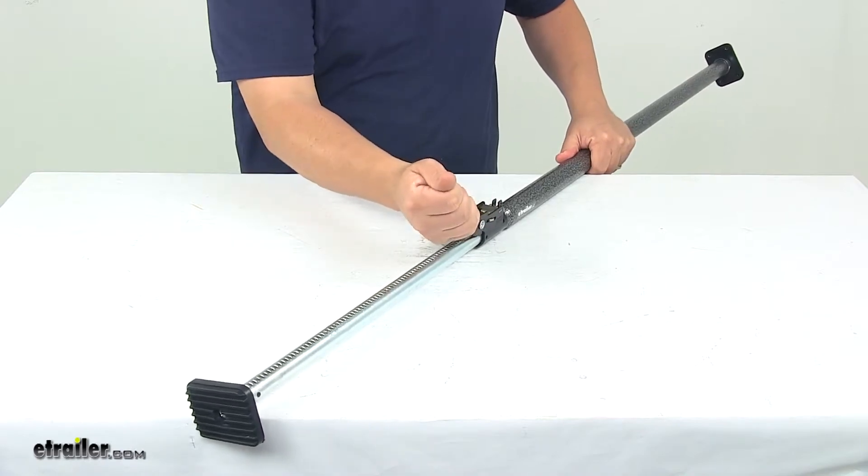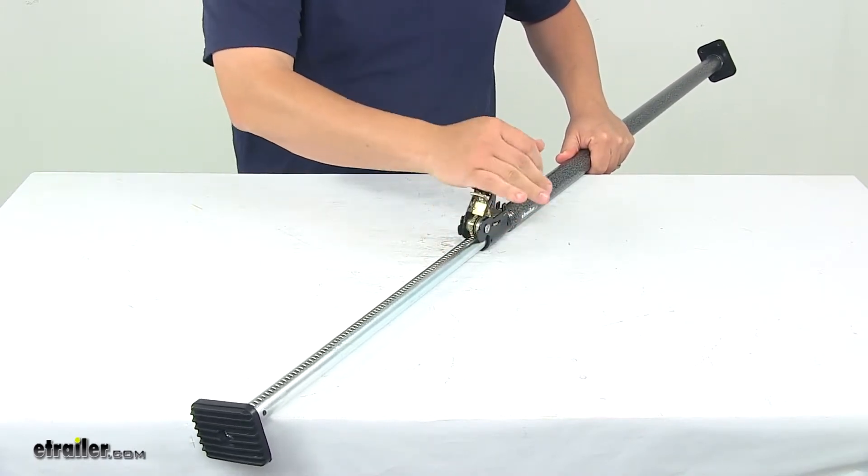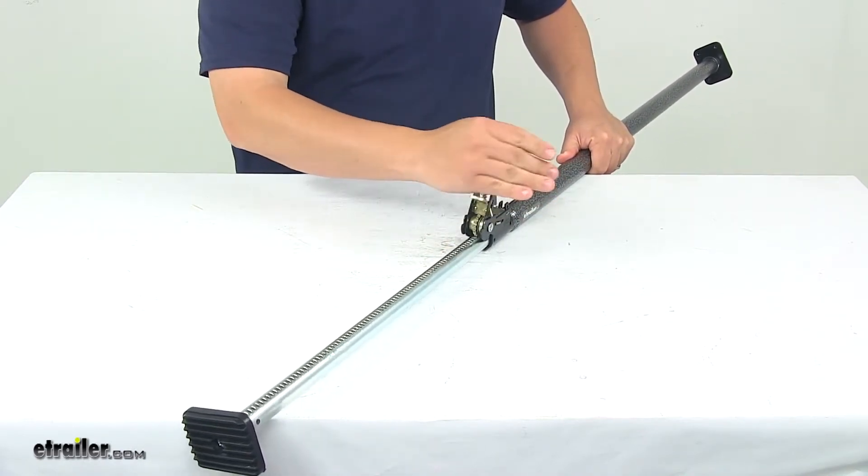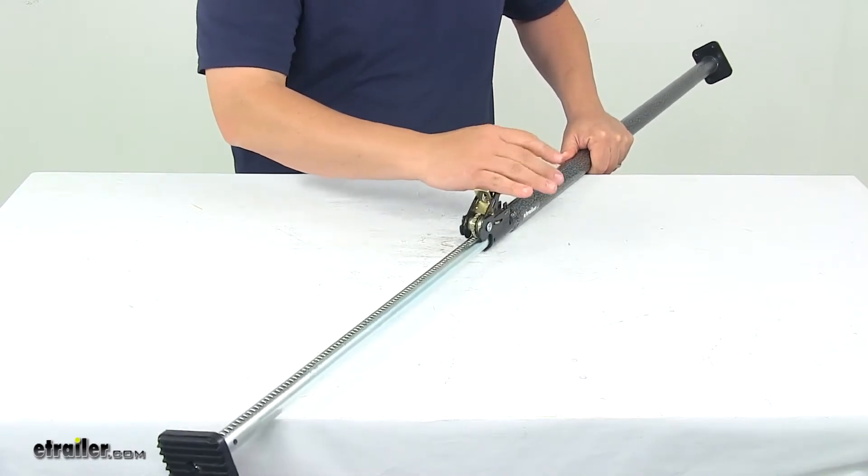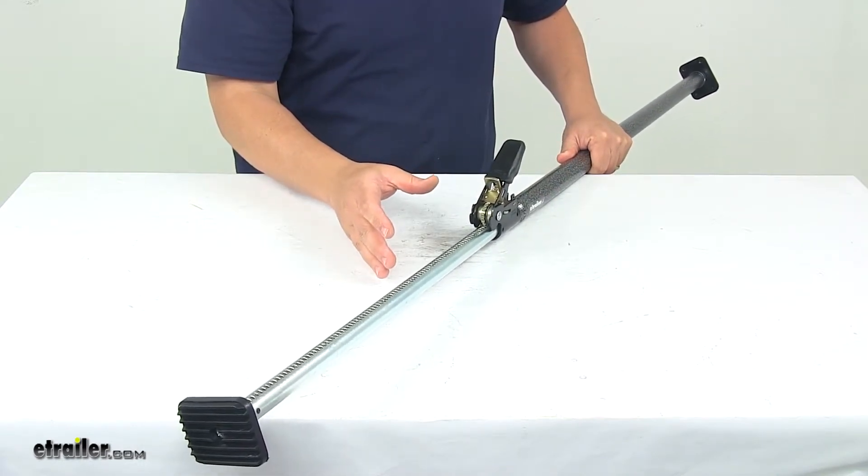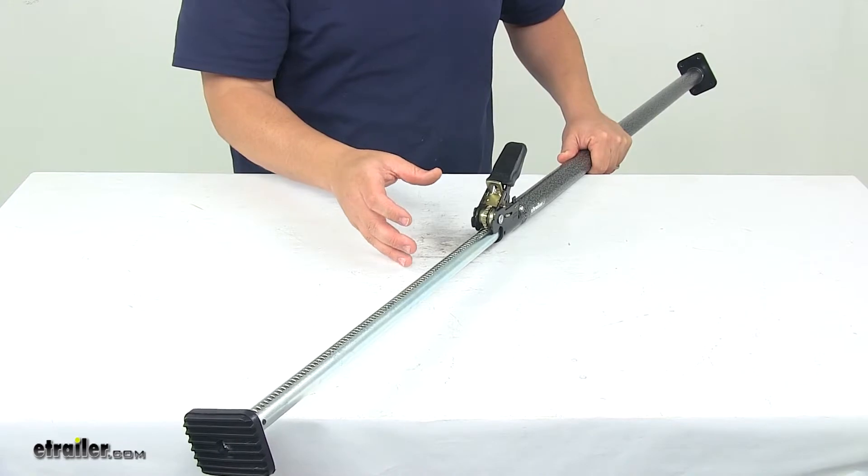And then to make any fine tune adjustments, put the handle in the ratcheting position. That allows you to apply the correct tension for a nice, strong, secure hold.